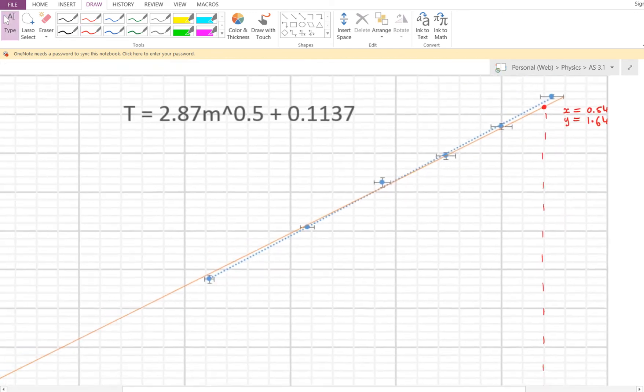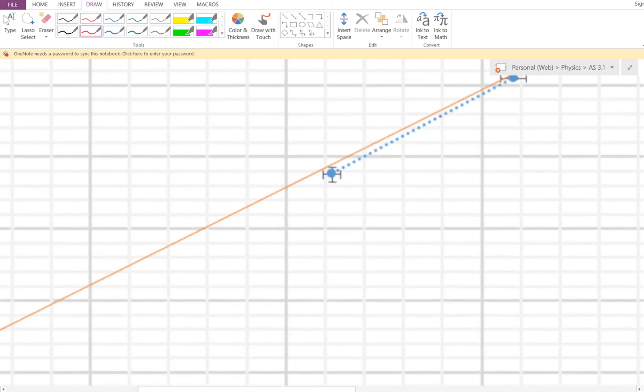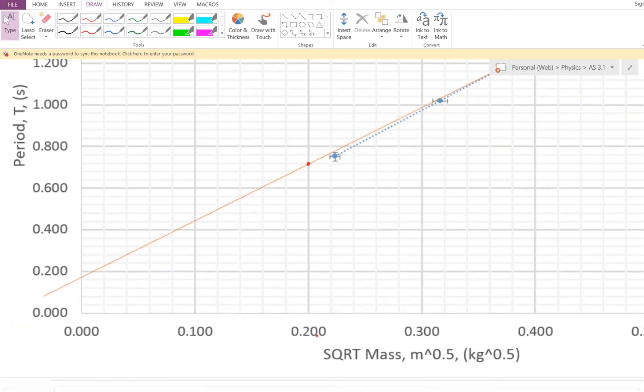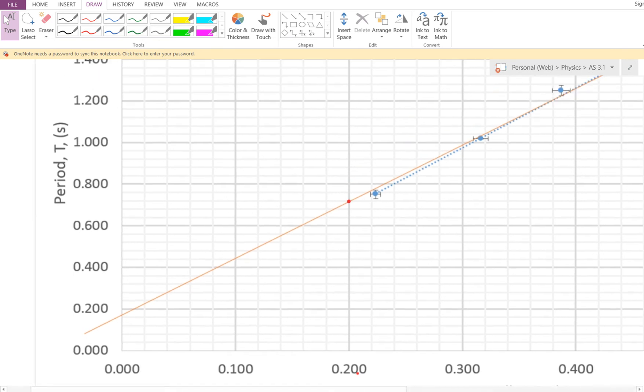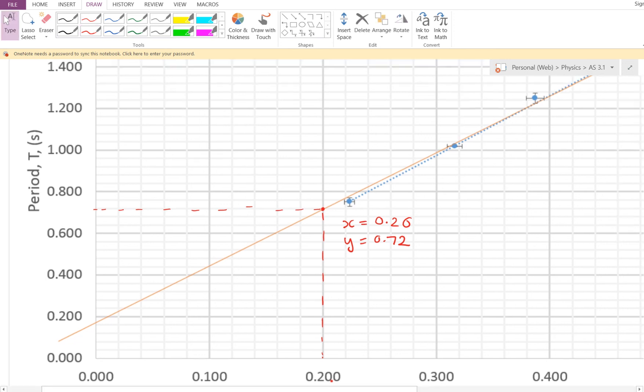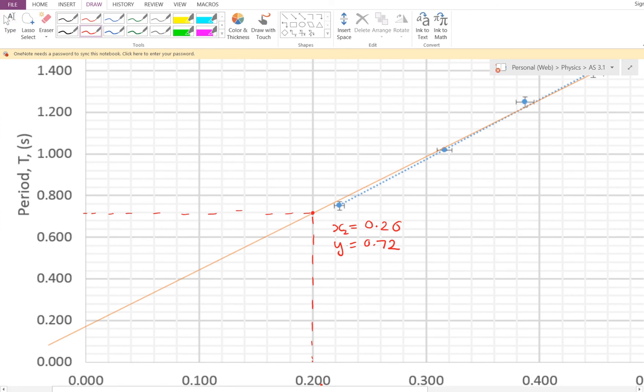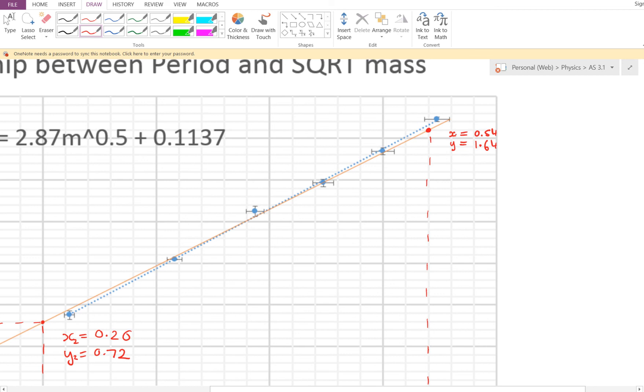I'll do the same again, but I'm going to do it for a point lower down. So that point there looks pretty perfect. It's going to be an x value of 0.20. You can see there, that lines up, and it's a y value of 0.72. So this here would be our x2 and our y2, and this one up here would be our x1 and our y1.